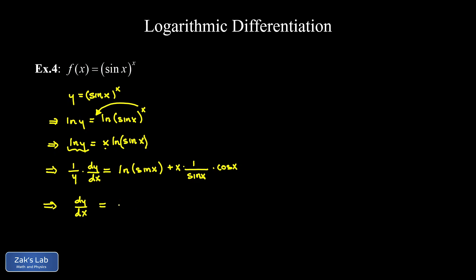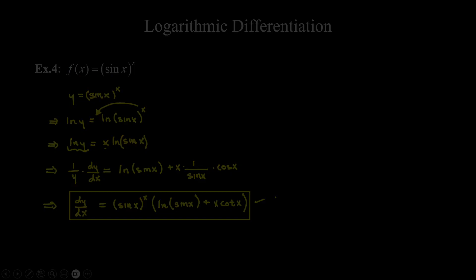Now we multiply both sides by y, and remember y = sin(x)^x. So we get dy/dx = sin(x)^x · (ln(sin(x)) + x · (cos(x)/sin(x))). Since cos(x)/sin(x) is cotangent x, that last term simplifies to x·cot(x). The final answer is dy/dx = sin(x)^x · (ln(sin(x)) + x·cot(x)).